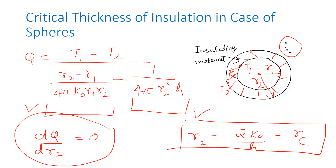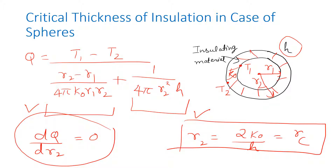For a sphere, the same analysis as the cylinder applies: at the critical radius, heat transfer rate is maximum due to competing conduction and convection effects. By differentiating q with respect to r2 and setting dq/dr2 = 0, we find r_c = 2k/h for a sphere. This is the final expression for critical radius of insulation in the case of spheres.